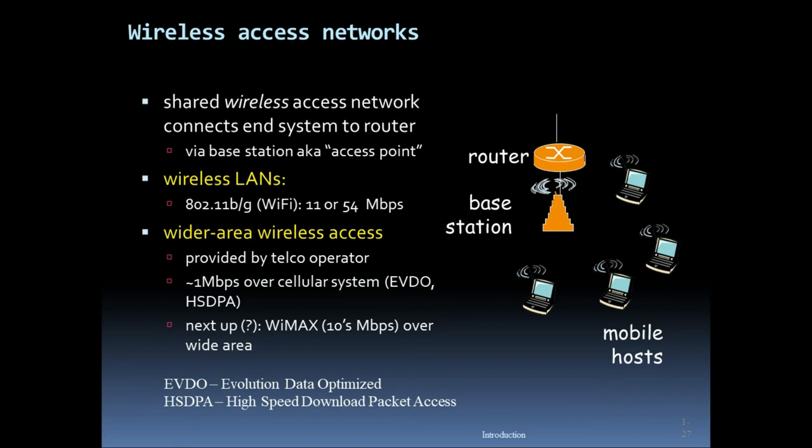Wide area wireless access is provided by telecom operators at 1 Mbps or higher using cellular systems. WiMAX operates over a wide area. This overview shows the router and wireless signals distributed to different mobile hosts — such as the routers we use in homes — connected to PCs.